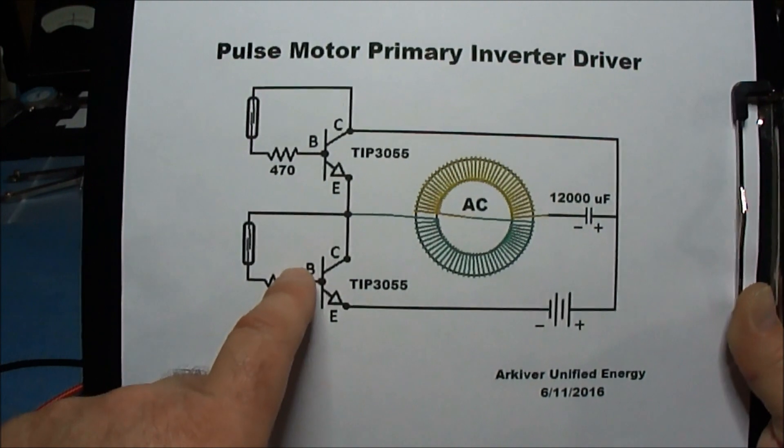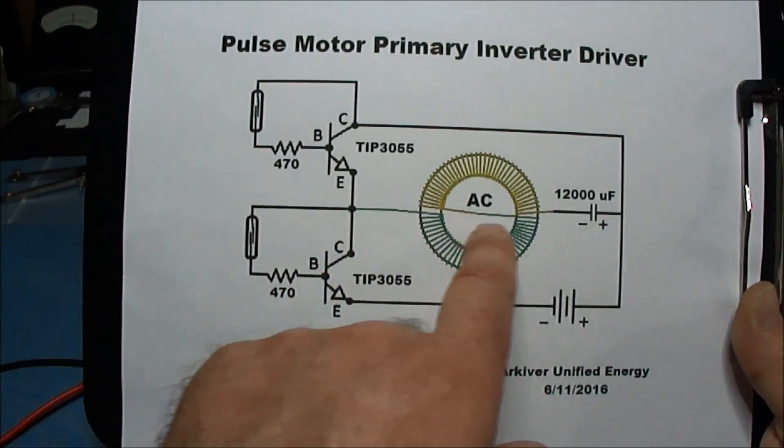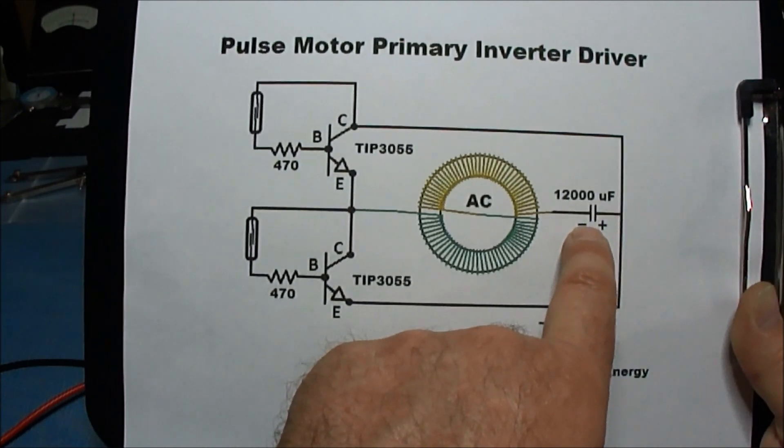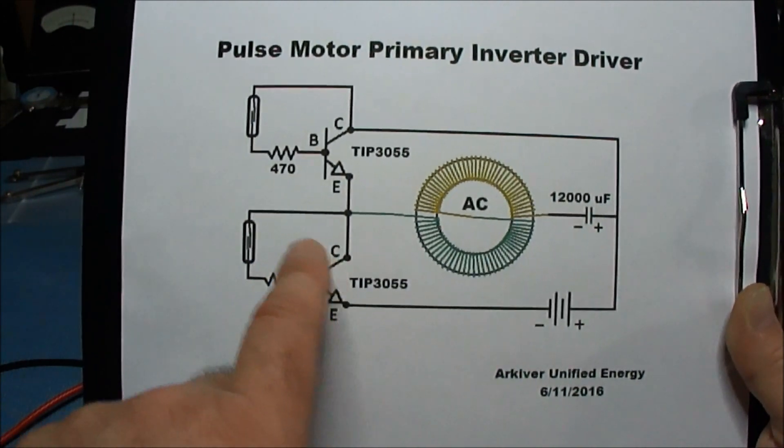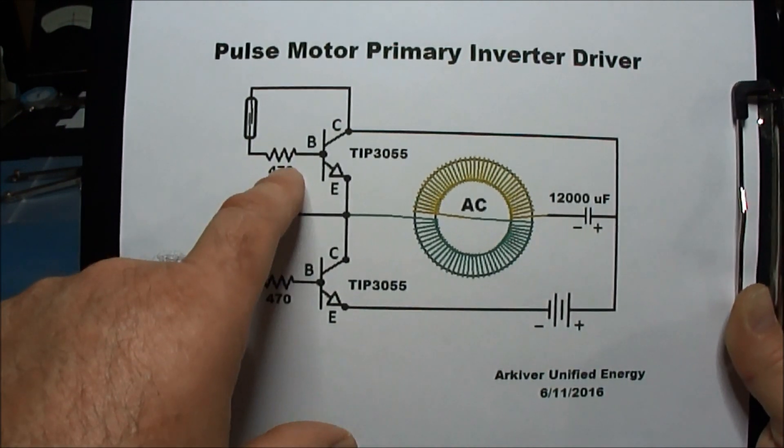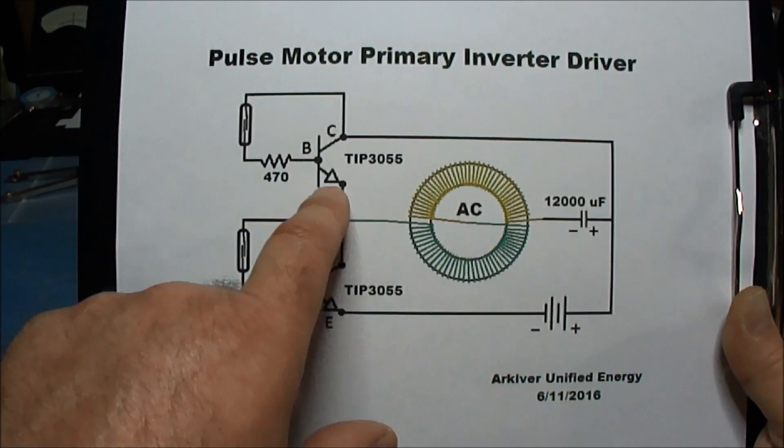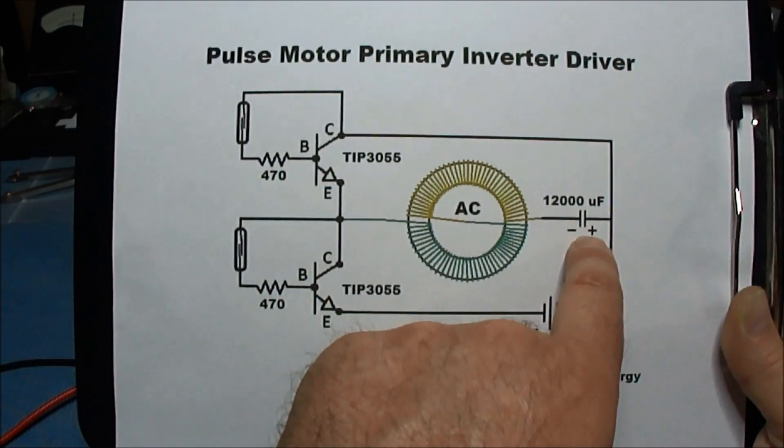When this transistor turns on, the current flows out of the battery through the coil and charges up this cap. The motor turns and this transistor turns off.